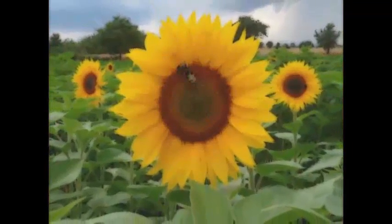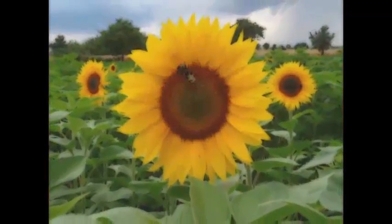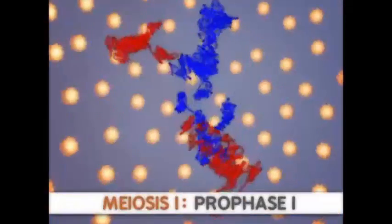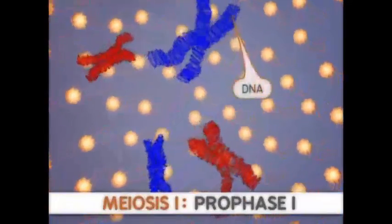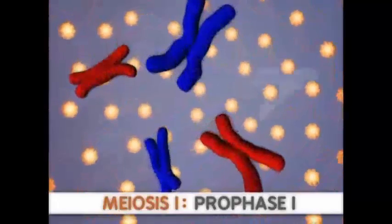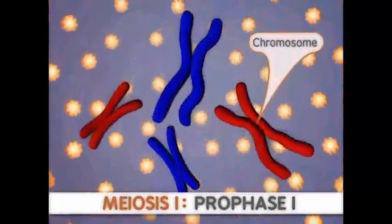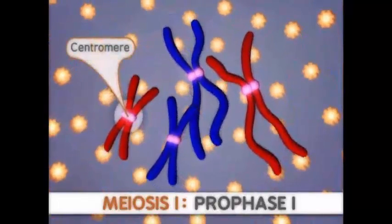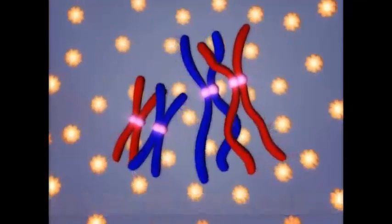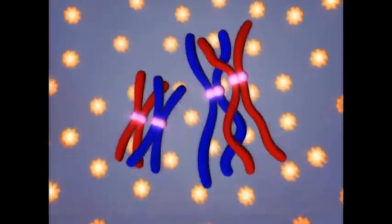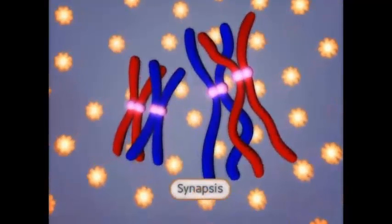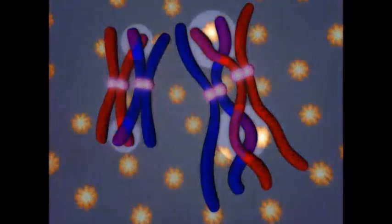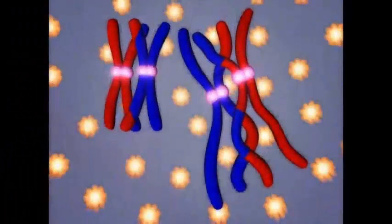There are two cell division events during meiosis. The first division, meiosis I, results in two unique daughter cells that have half the amount of DNA as the parent germline cell. The second division, meiosis II, results in four unique haploid cells that only have one copy of each chromosome. These haploid cells are the gametes that could go on to produce an offspring through sexual reproduction.